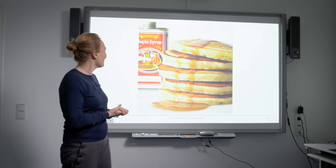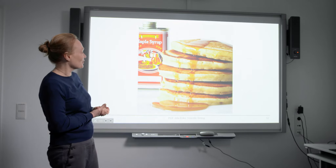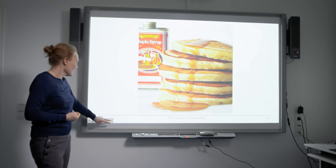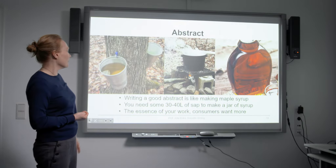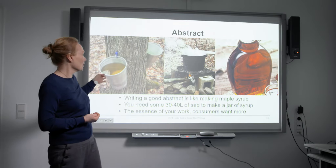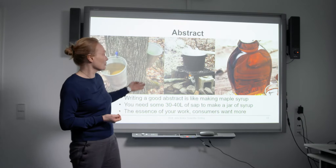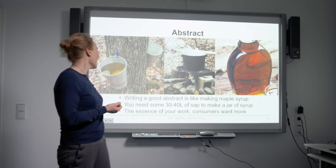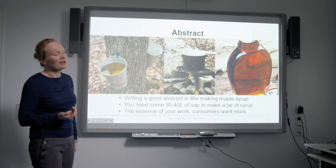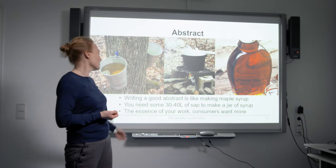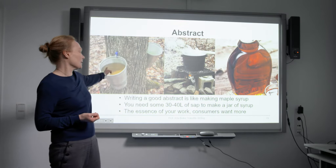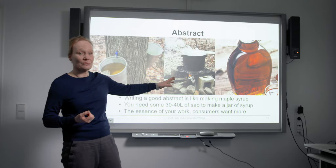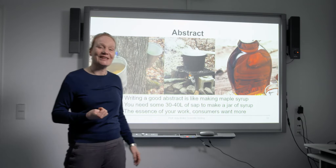Here is a picture of pancakes and Canadian maple syrup to illustrate the abstract writing process. Making maple syrup takes a long time — you collect sap at a specific time of year, then boil it repeatedly until you get this marvelous liquid. Compare abstract writing to making maple syrup: you need some 30 to 40 liters of sap to make one jar of syrup. The abstract is the essence of your work — if your abstract is in the shape of maple syrup, you have good chances that readers will like it.